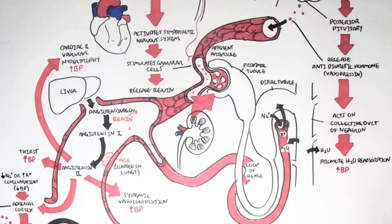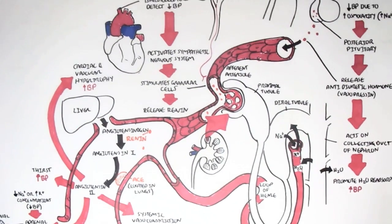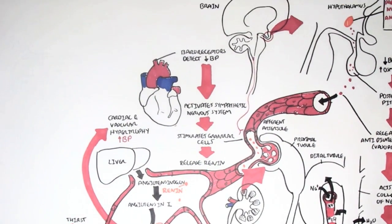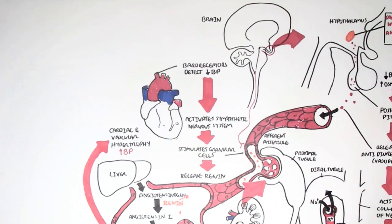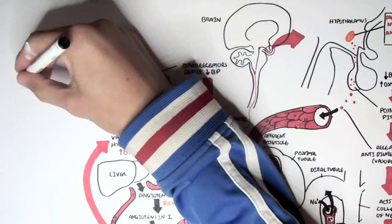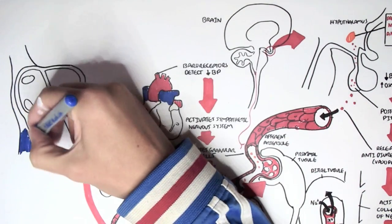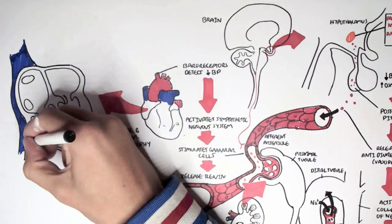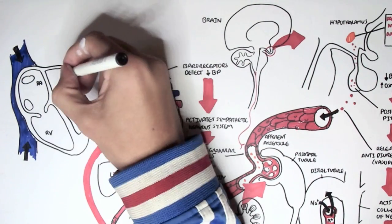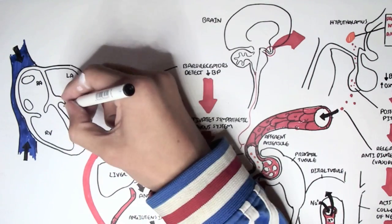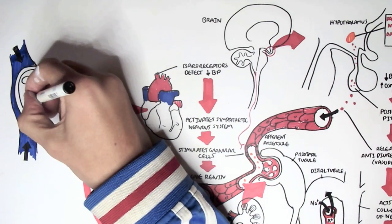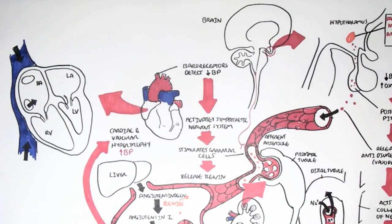Well, there is one hormone which is secreted by the heart. Let's look at the heart anatomy to understand this hormone. Here we have the heart: the right atrium, the right ventricle, the left atrium, and the left ventricle. The superior and inferior vena cava bring blood into the right atrium.